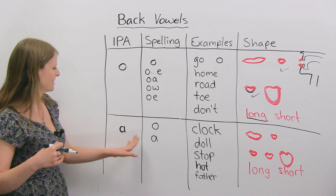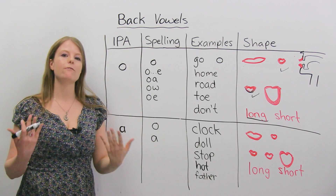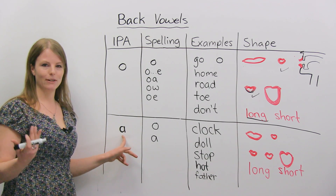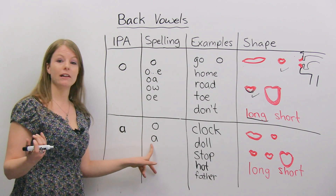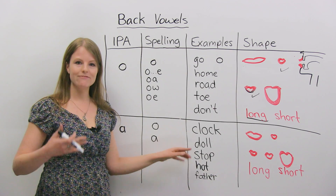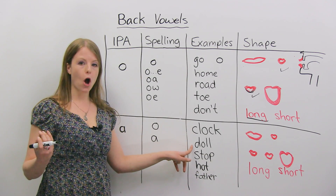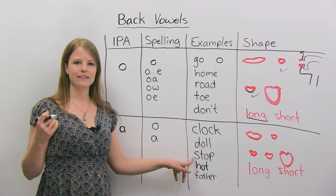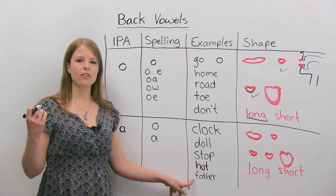The IPA symbol represents "ah" when you see it. In terms of spelling, we can spell this with an O or sometimes with an A. Words that have this sound: clock, doll — notice how big my mouth gets — stop, hot, and father.